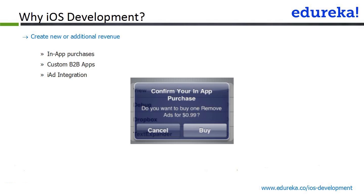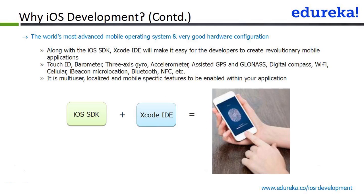So why iOS development? Create new or additional revenue. The second reason is that iOS is the world's most advanced mobile operating system with very good hardware. Android gives it tough competition, but iOS has maintained its leadership position. Along with the iOS SDK and the Xcode IDE, both combine to make it very easy for developers to create revolutionary mobile apps. When you download the IDE, you get the SDK as part of it, with many ready-made classes to access device features.